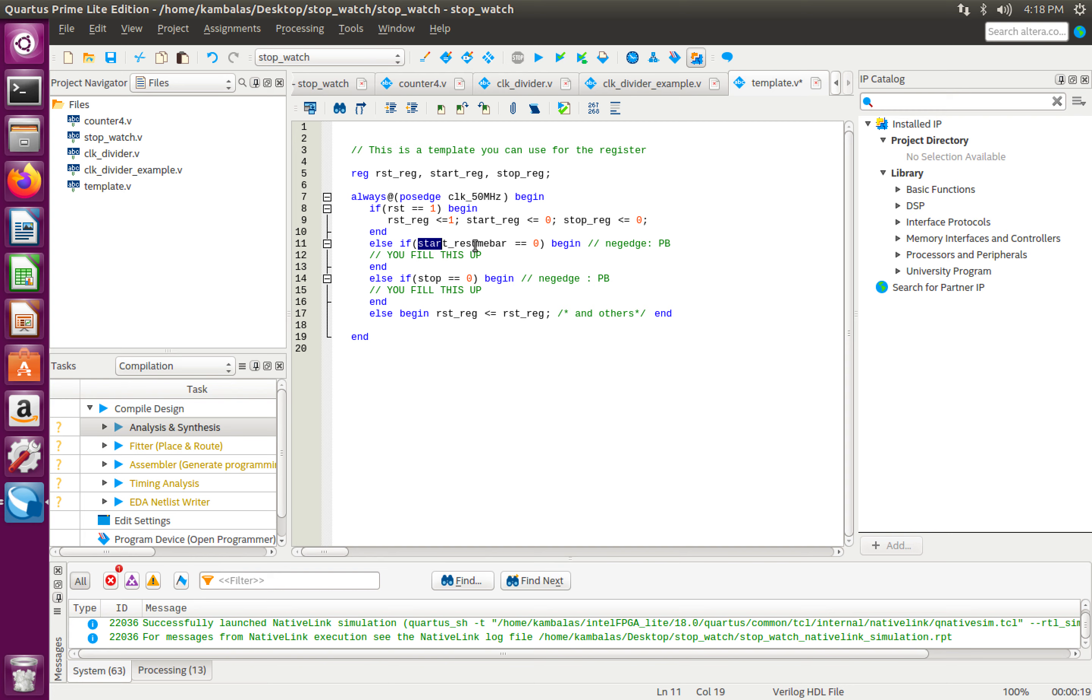So if because my start is 1, what will happen? This guy goes to 0, this guy goes to 0, this guy ends up becoming 1, which is my start. And the same with my stop. And then finally, this else statement, this is very important. You need to have this else statement.